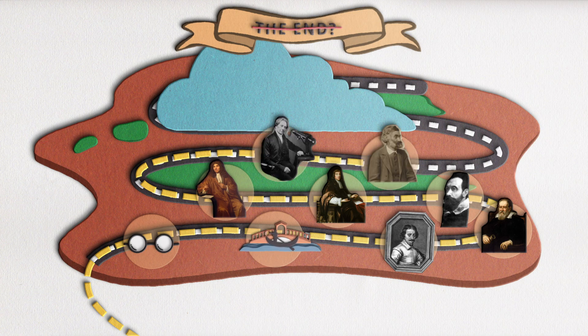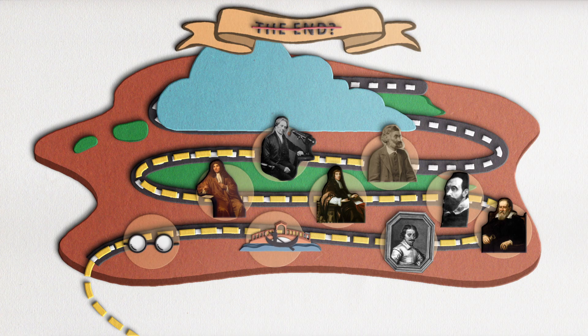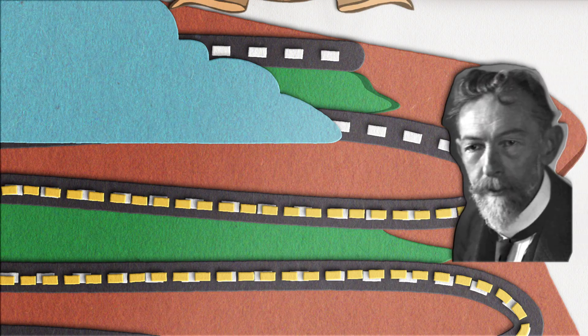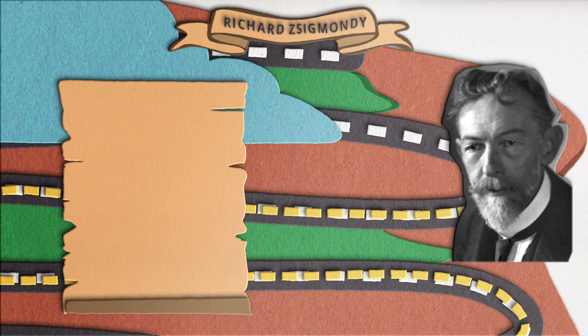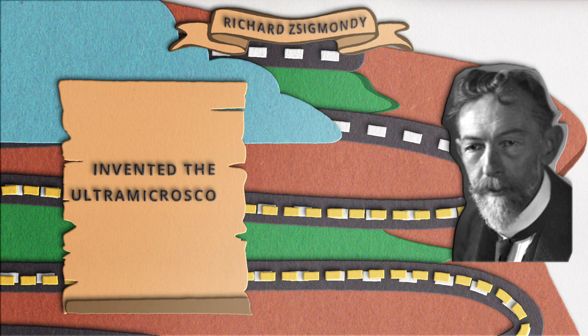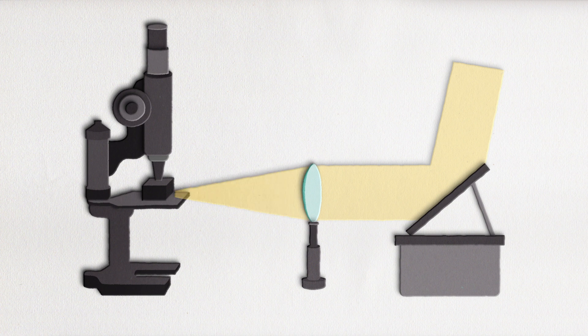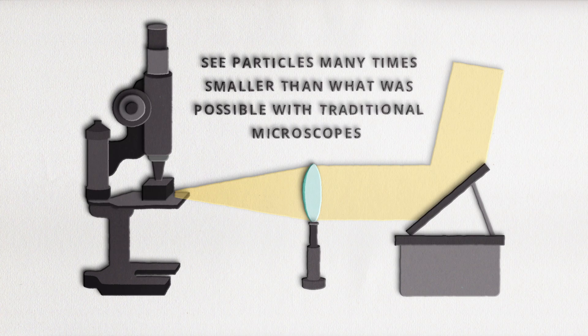Heck no. Scientists are always curious, thank goodness. Otherwise, we would still think that the Earth was flat, right? In 1903, Richard Zygmonde invented the ultramicroscope. He discovered that by illuminating very small particles in a direction perpendicular to the viewing angle, you could see particles many times smaller than what was possible with traditional microscopes.